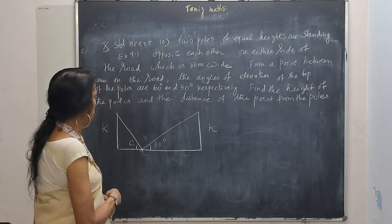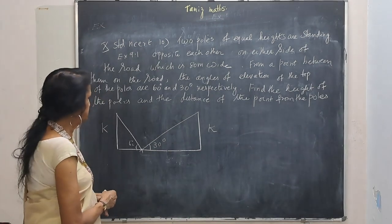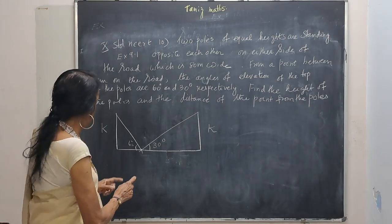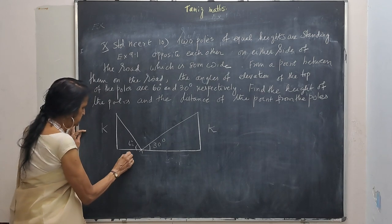What is he asking you? Find the height of the pole, find K. And then the distance of the point from the pole, that is I have to find out this distance and this distance. I can call this as X.